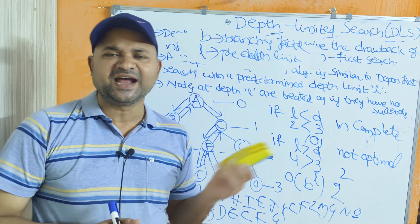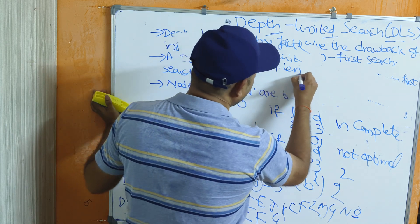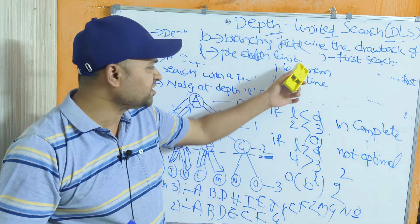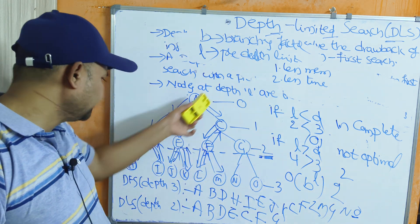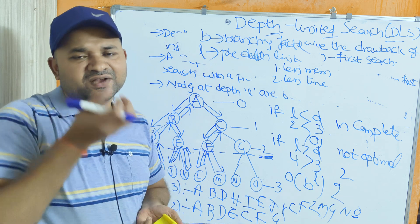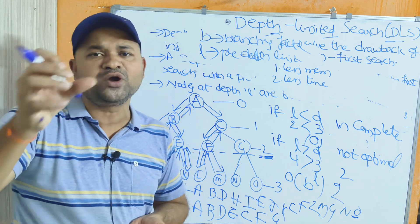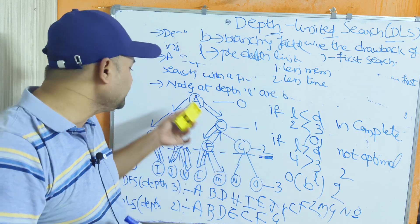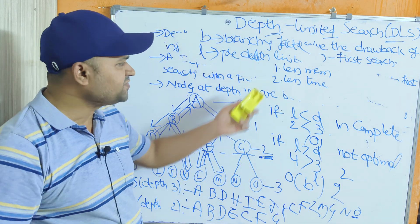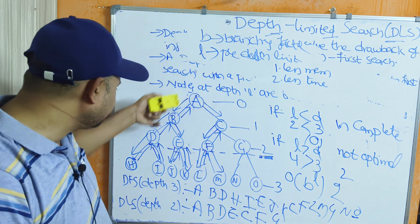The advantages of DLS are less memory and less time — similar to DFS. For memory, DLS searches along a single path first; if the goal is found in that path, there is no need to store all other nodes. So DLS occupies less memory because we only need to store nodes along the current path being explored.